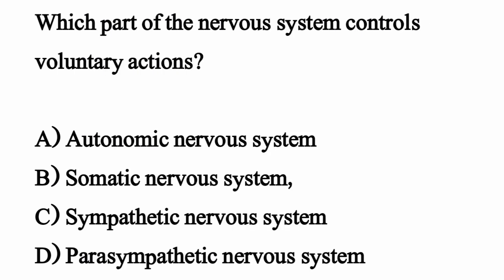Which part of the nervous system controls voluntary actions? The correct option is option B: Somatic nervous system.